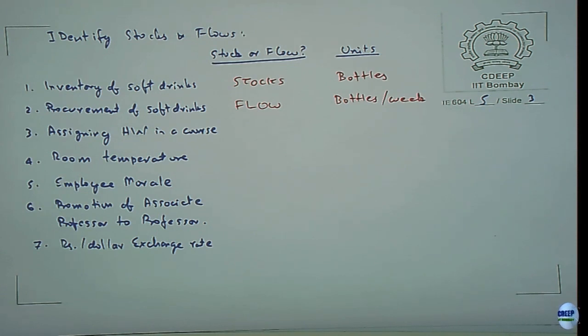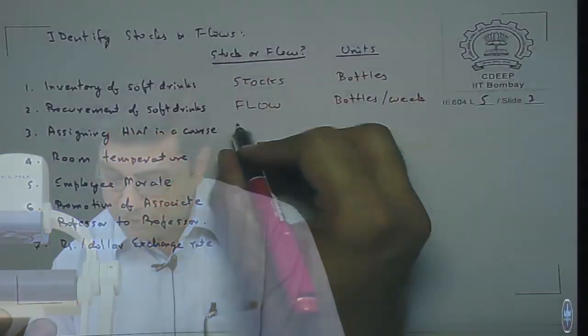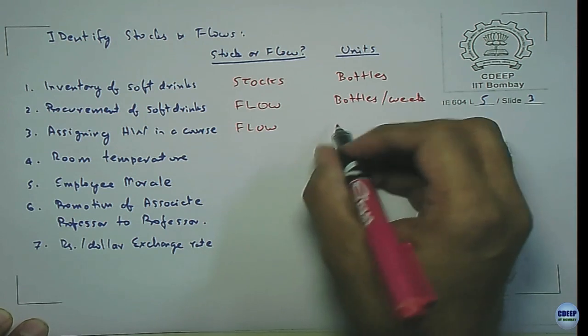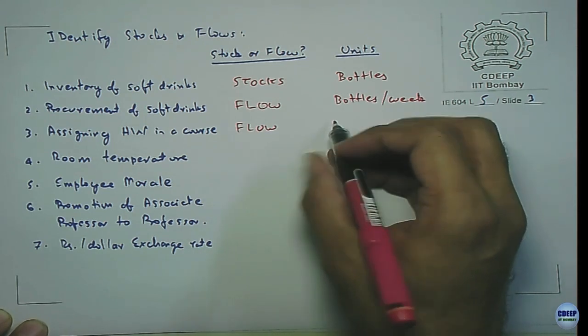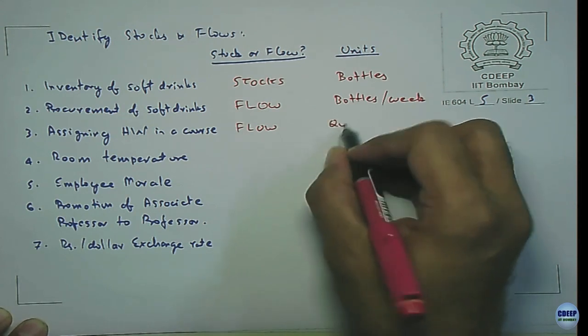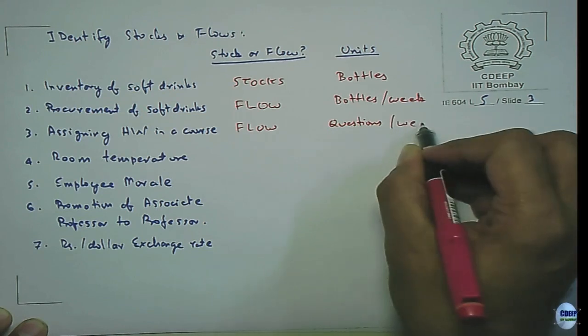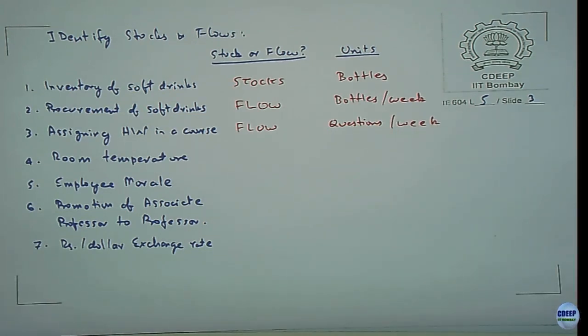Assigning homework in a course — is it a flow or a stock? It is a flow. Units could be questions per week — assigning homework comes as a rate. The number of pending or uncompleted assignments would be the stock. As assignments are given, that stock increases; as and when you complete them, that stock goes down. Room temperature — units: degrees Celsius.